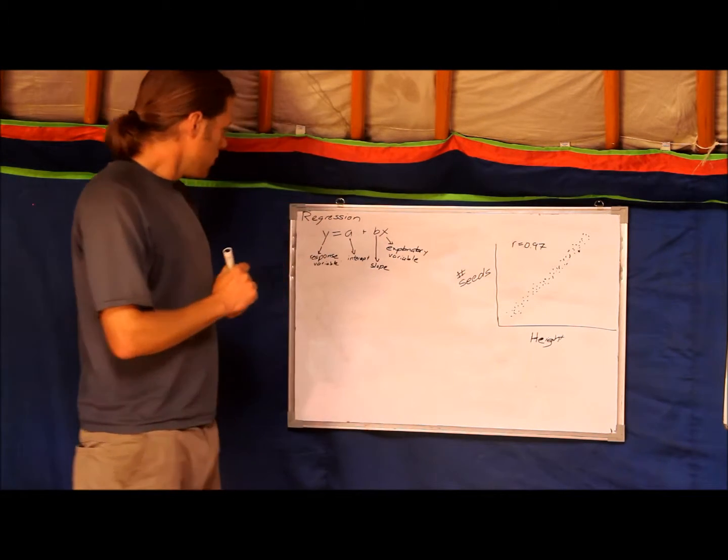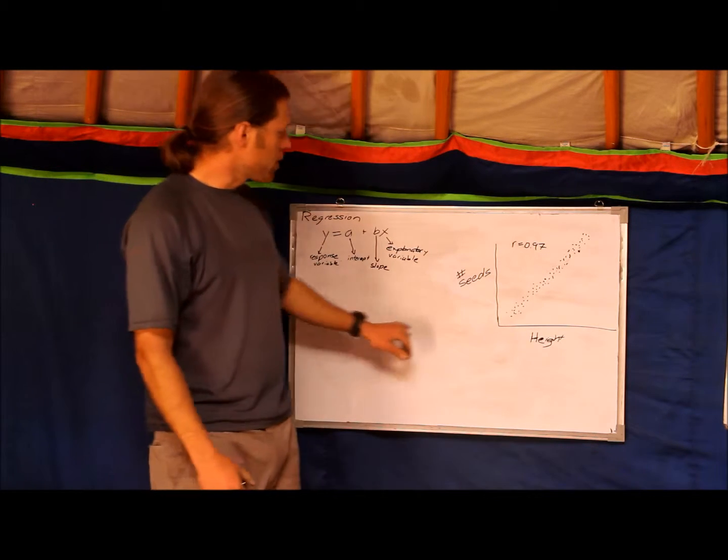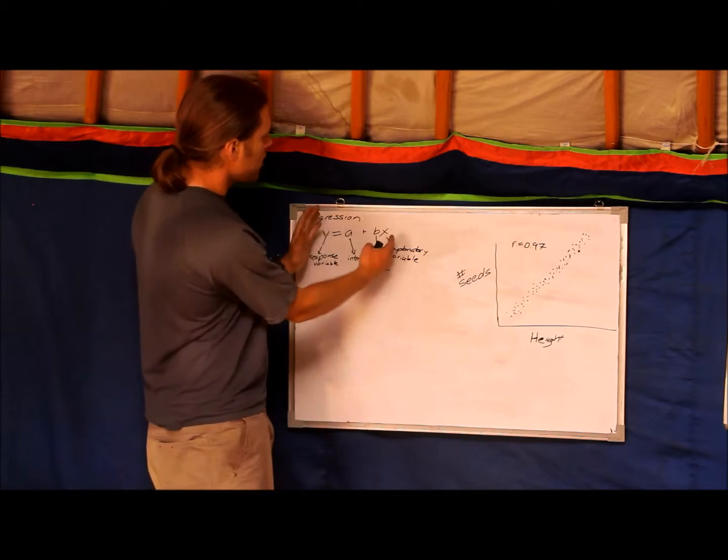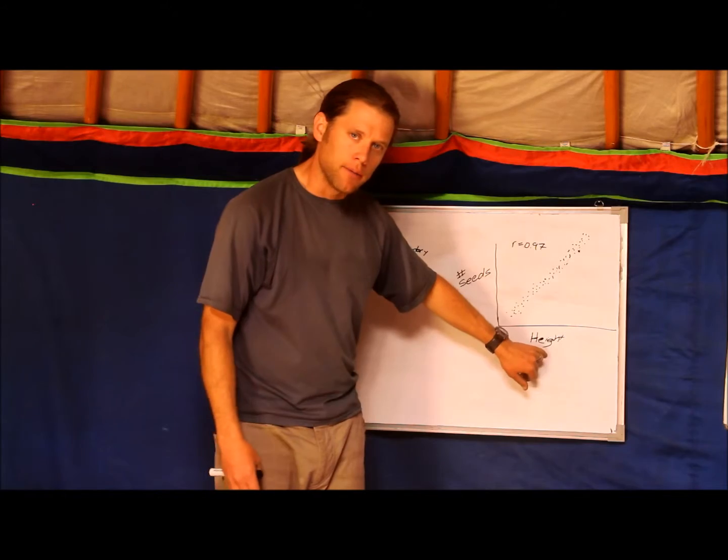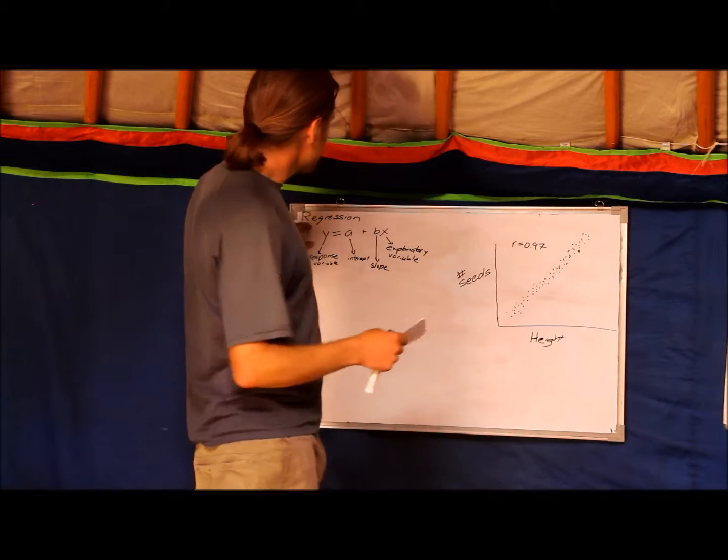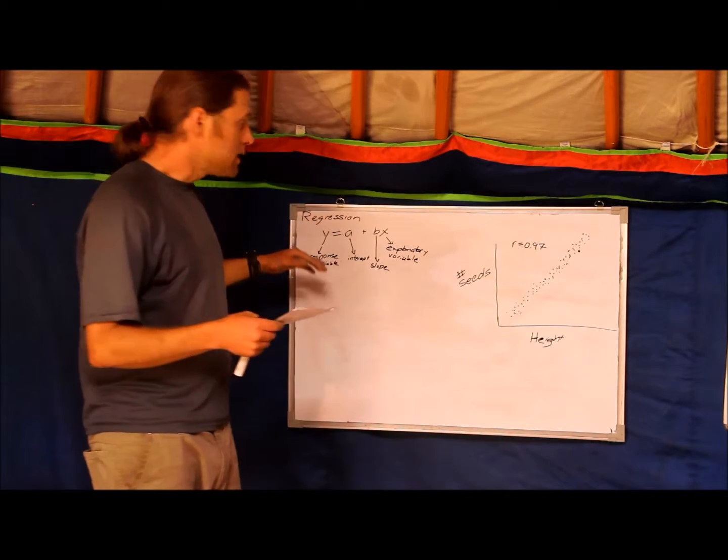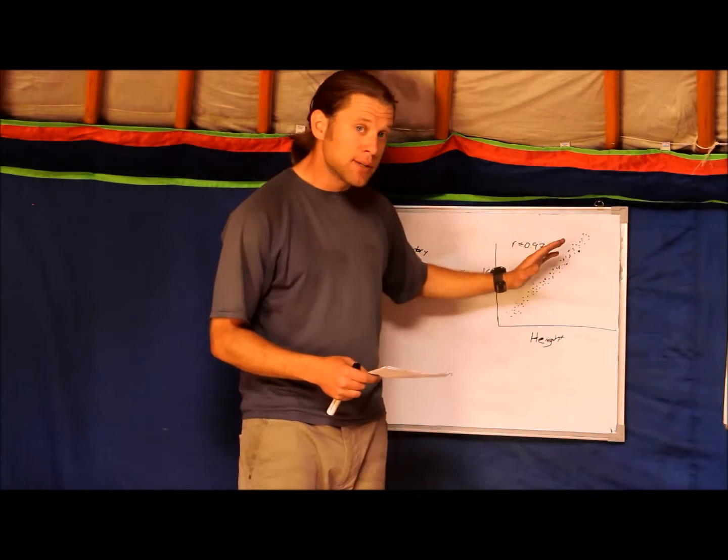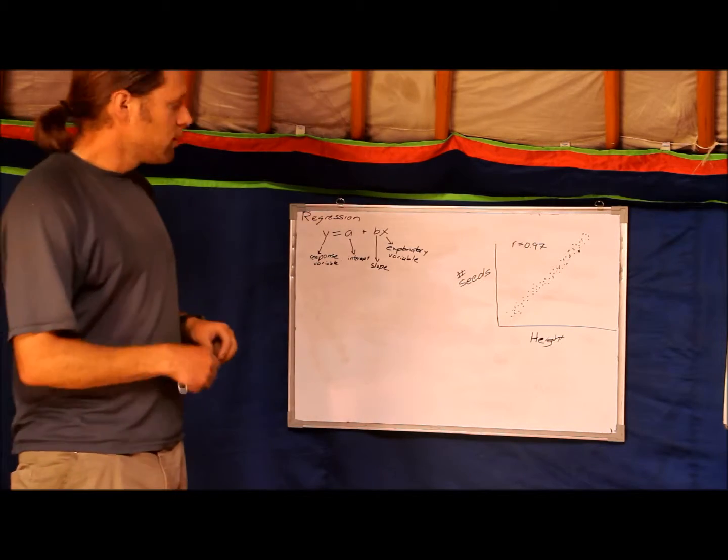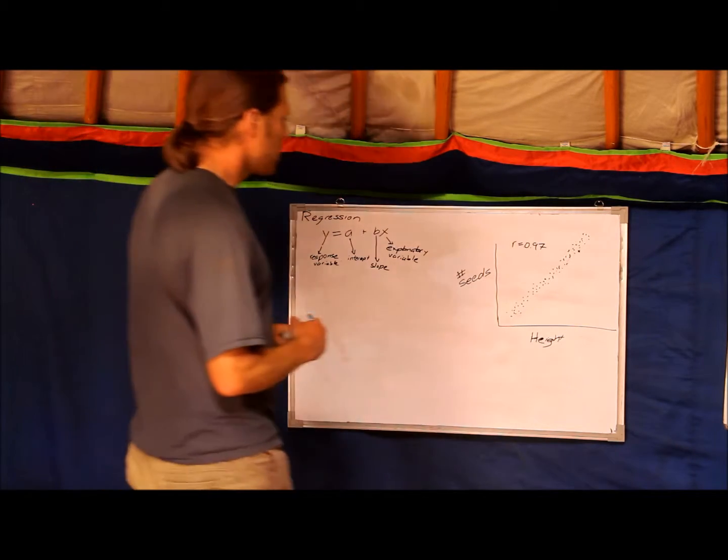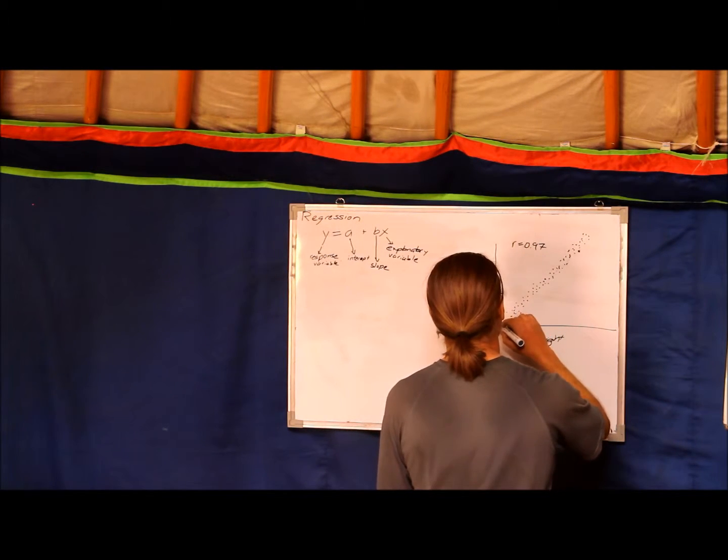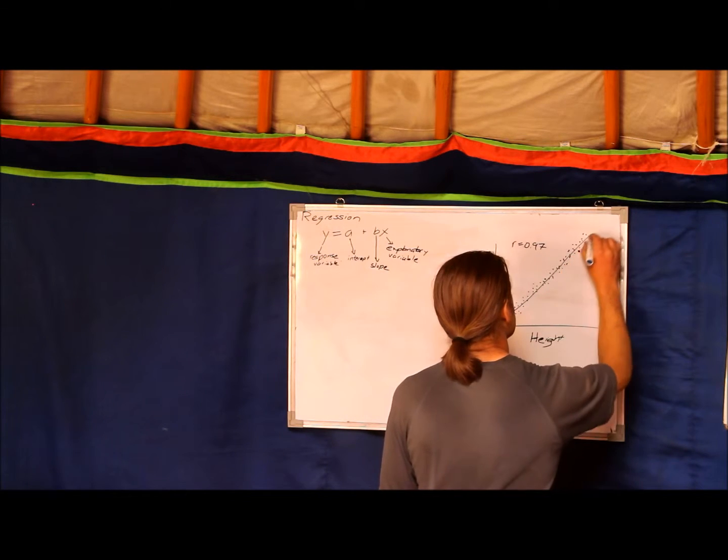Looking at this, what this means is that your response variable, your number of seeds, can be predicted by some equation relating to their height. In more technical terms, what a regression does is that you fit a line to data and that line minimizes error. I'm going to draw in a line here in blue. A regression fits a line and it would probably be something like this in this example.